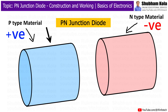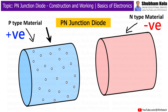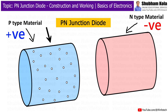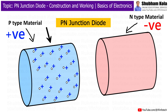P-Type Material: Imagine a material where there are some missing electrons, creating holes where electrons could be. These holes behave like positive charges because they attract electrons. This type of material is called P-Type Material because it has a positive nature.